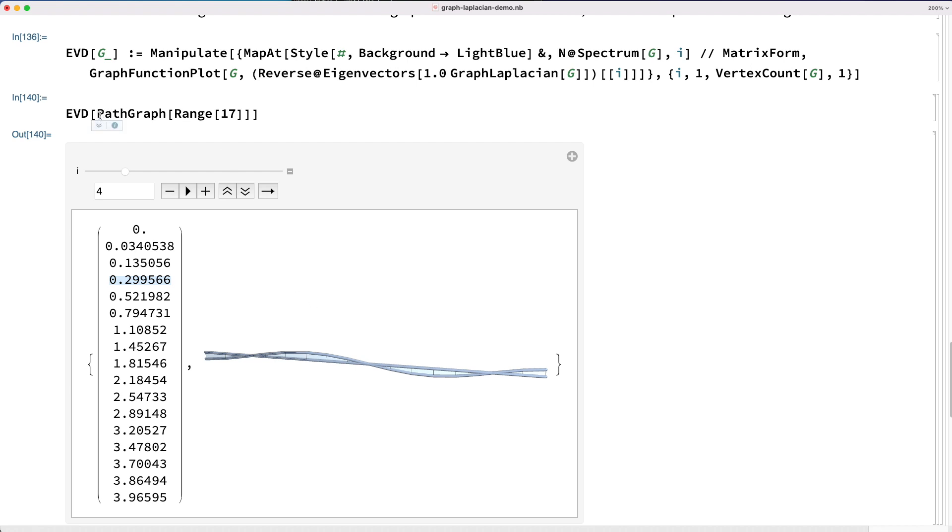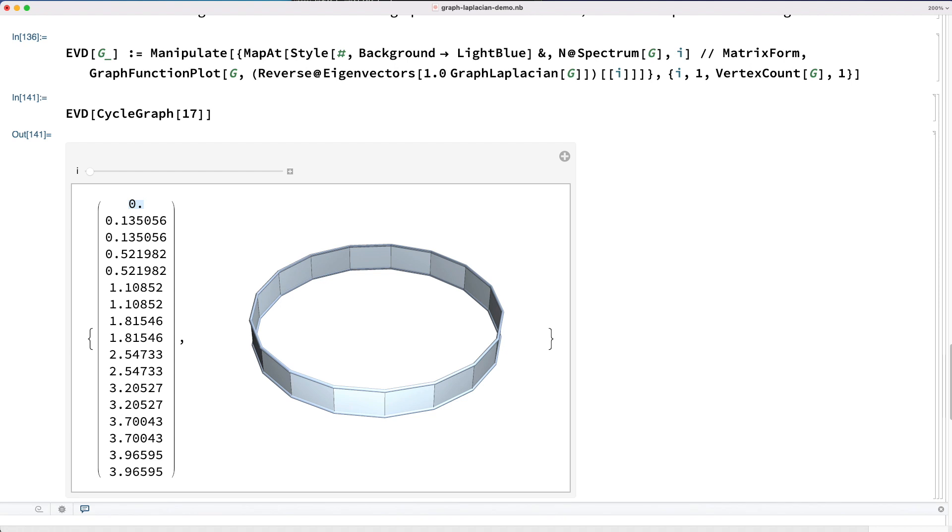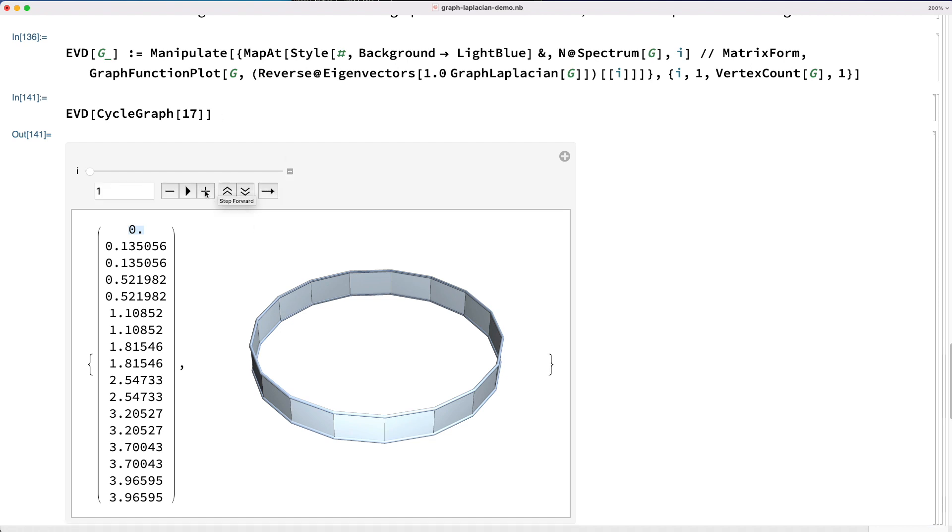Now we can see this same structure if we try the cycle graph. Again, we start with a constant function, and now we have more and more waves as we increase in eigenvalue.